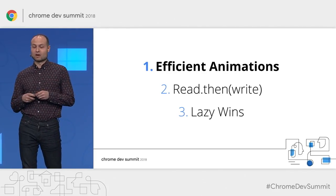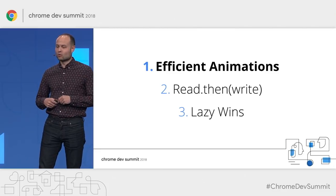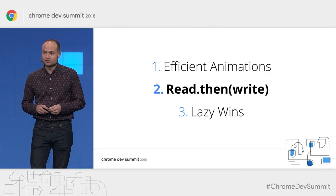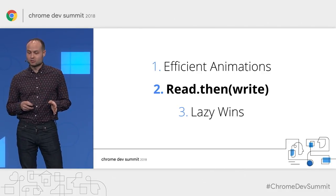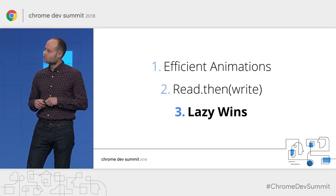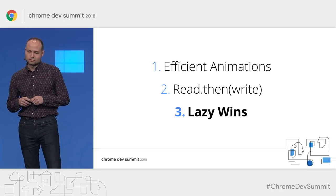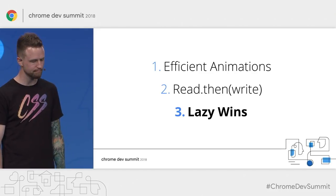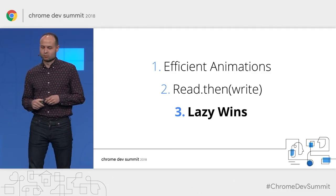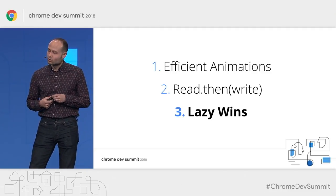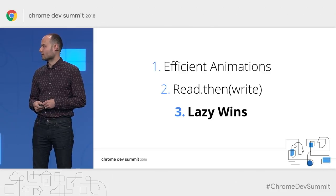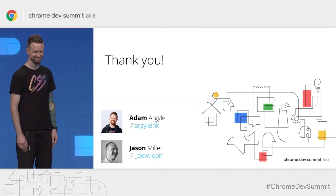To sum things up: make sure you're keeping the browser's rendering pipeline in mind when animating, and always try to avoid animating layout. Sync up your DOM access so you read properties that require layout information before mutating the DOM and causing layout. Consider using optimistic interactions because they can sometimes be better than optimizing rendering, especially if you're just getting started. And finally, take advantage of places where you can offload the most performance-critical work to the browser. If you can leverage something like scroll snapping or position:sticky to implement your designs, that might be the biggest performance win of all — it's a lazy win. Thanks everybody.